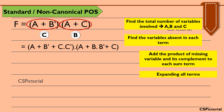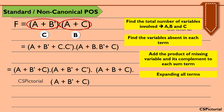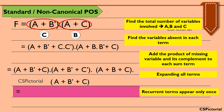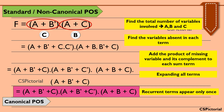Expand all the terms in the next step. The expression now becomes (a plus b bar plus c) into (a plus b bar plus c bar) into (a plus b bar plus c) into (a plus b plus c). Cancel out the recurrent terms, making the final expression (a plus b bar plus c) into (a plus b bar plus c bar) into (a plus b plus c). This is the final canonical POS expression.